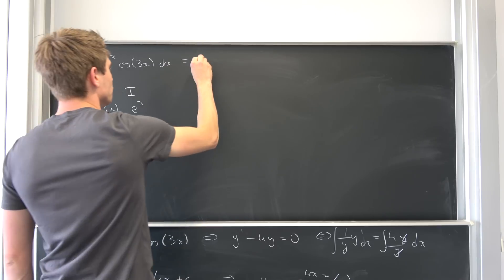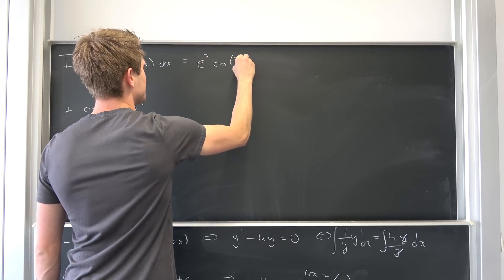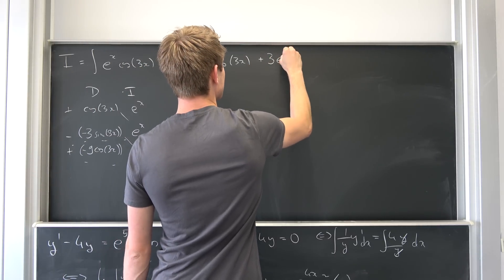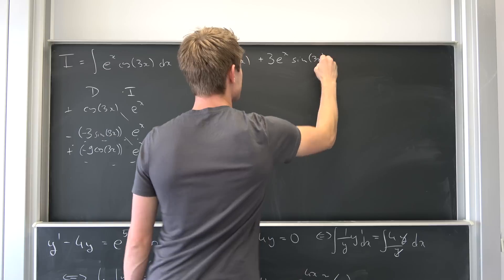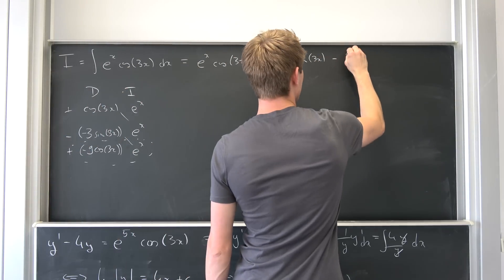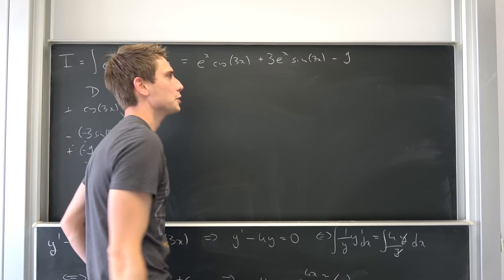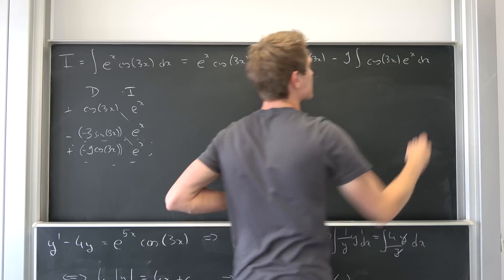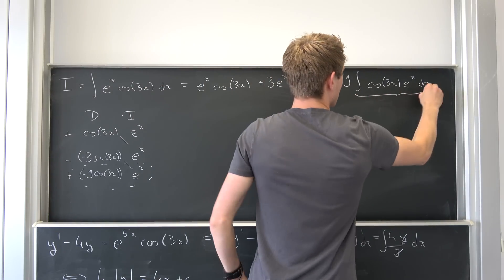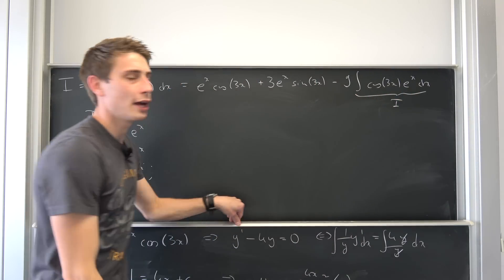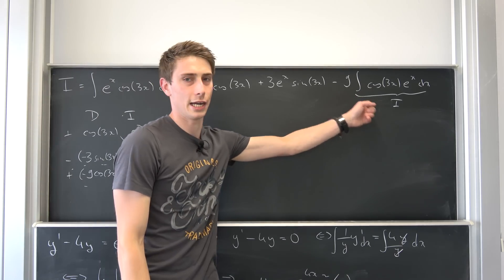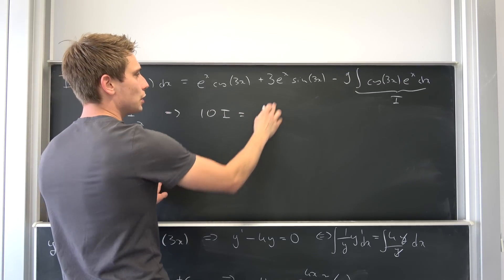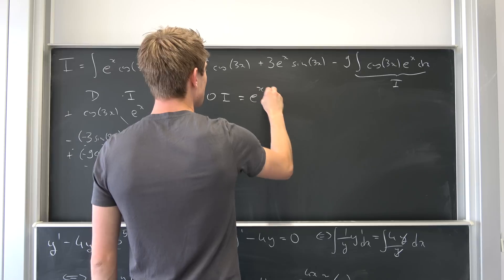So the first part is going to evaluate to e to the x cosine of three times x. Negative and negative becomes positive. So positive three times e to the x sine of three times x and then negative. And I'm going to bring this nine to the front using the linearity of the integral. Integral of cosine three times x e to the x dx. And if you might notice this thing right here is just i and what we can do now we can add 9i on both sides to get exactly 10i being equal to and you can fact out this e to the x if you like e to the x.